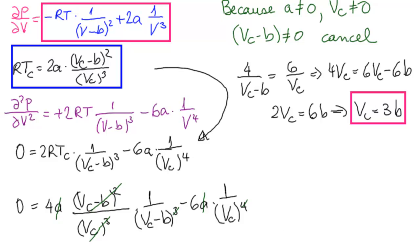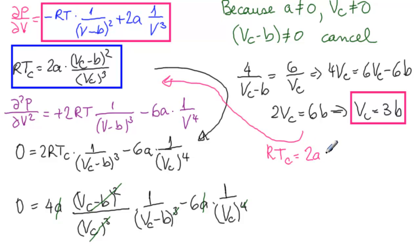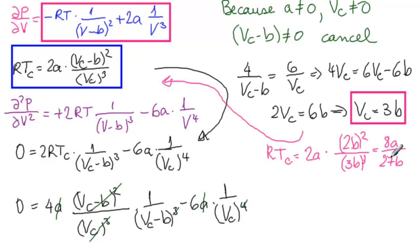We substitute VC equals 3B back into our equation for RTC. So RTC equals 2A times (3B minus B)² over (3B)³ equals 2A times 4B² over 27B³ equals 8A over 27B. Therefore TC equals 8A over 27BR.